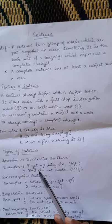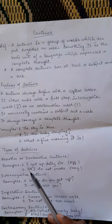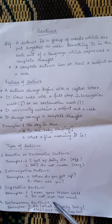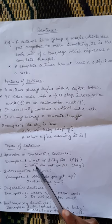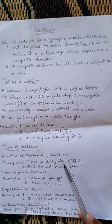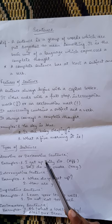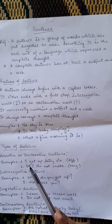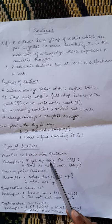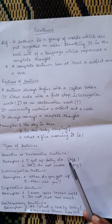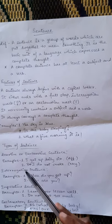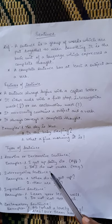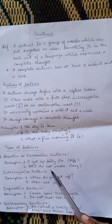Now we proceed with types of sentences. We have four kinds of sentences: first is assertive, second is interrogative, third is imperative, and last is exclamatory. An assertive sentence starts with a capital letter and ends with a full stop. A declarative sentence is also known as an assertive sentence, and it is divided into affirmative and negative sentences. For example, 'I get up daily at six' is an affirmative sentence. 'I do not smoke' is a negative sentence, because words like no, not, and never make it a negative sentence.